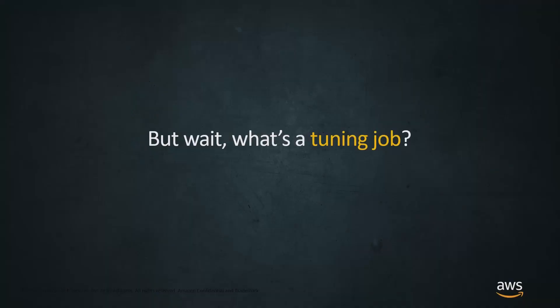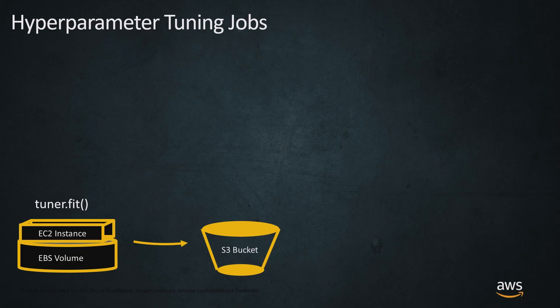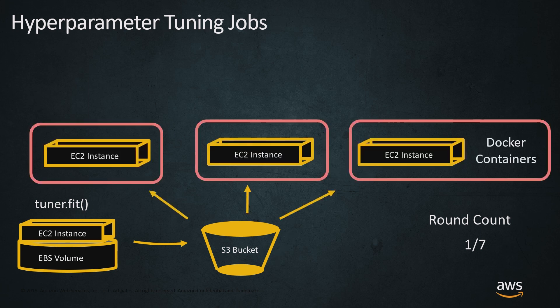But wait — what's a tuning job? That's what we're here to learn about. When developing a hyperparameter tuning job, most commonly we'll start with the notebook instance. We get everything configured, create what's called a tuner, and then call tuner.fit. SageMaker copies our data out to S3. We think about model training in terms of rounds. For the first round, SageMaker spins up three different versions of our model with three different hyperparameter settings — all living as separate training jobs. The hyperparameter tuner operates as an orchestrator, running a large number of sub training jobs.